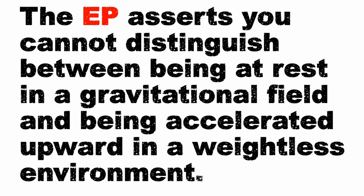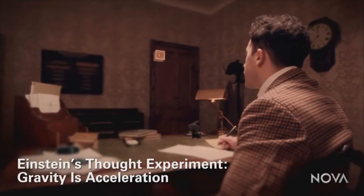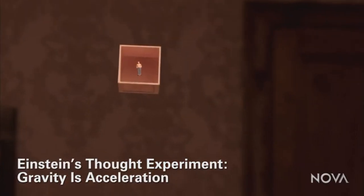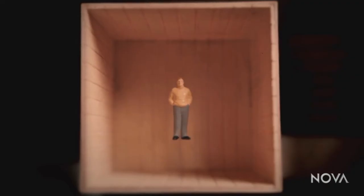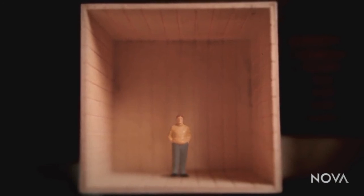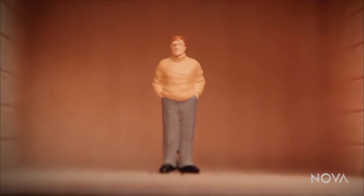The equivalence principle asserts you cannot distinguish — you can't tell the difference — between being at rest in a gravitational field and being accelerated upward in a weightless environment. Einstein imagines a man in a box floating weightlessly in a distant region of space in zero gravity. Suddenly the man stops floating and accelerates downward until he's standing in the box. What has happened?